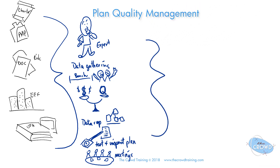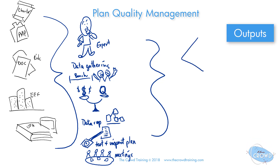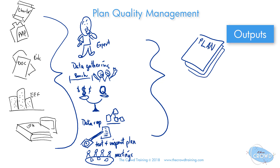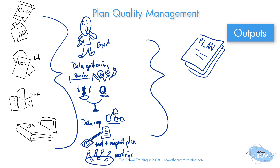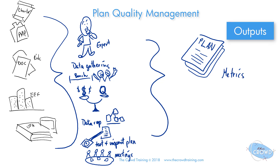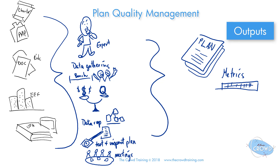Those are the tools and techniques. Let's move on to the outputs. Obviously, if we're all about making plans for how to manage the quality of the project, we should have a quality management plan. This plan will contain guidelines, tools, methodologies, and approaches for quality. It could also reflect the metrics that have been determined for measuring quality — when and how we're going to do it and what we're looking for.